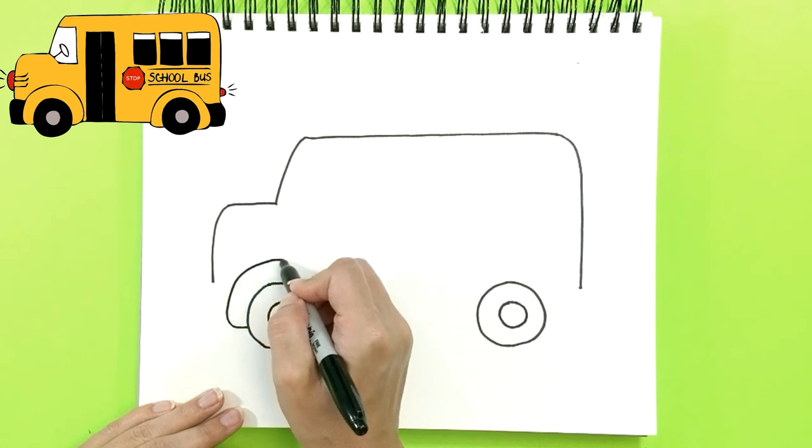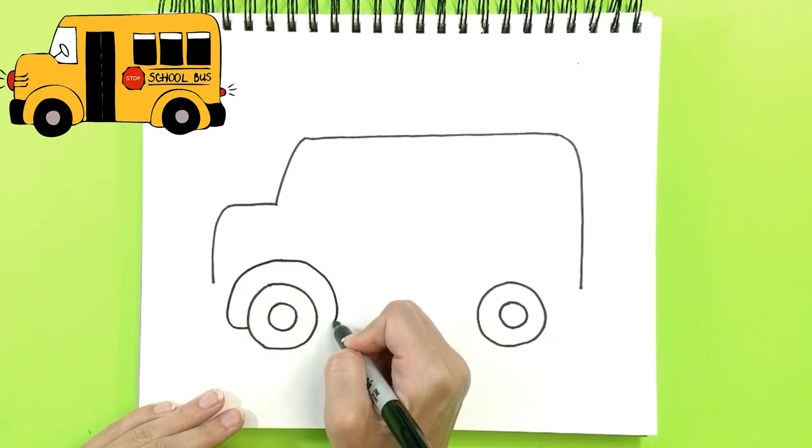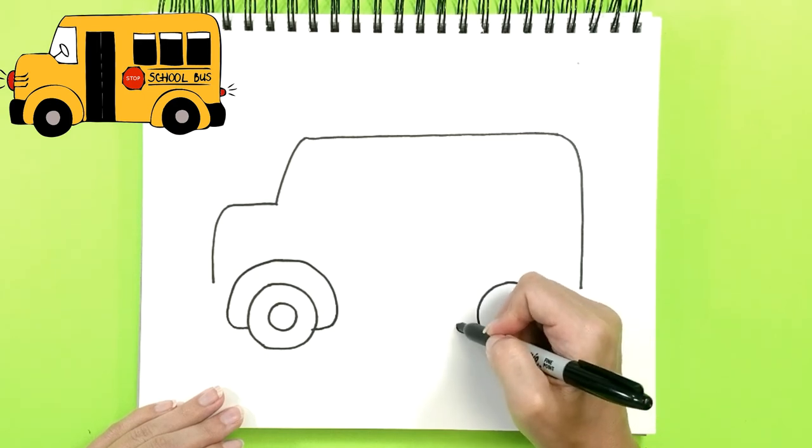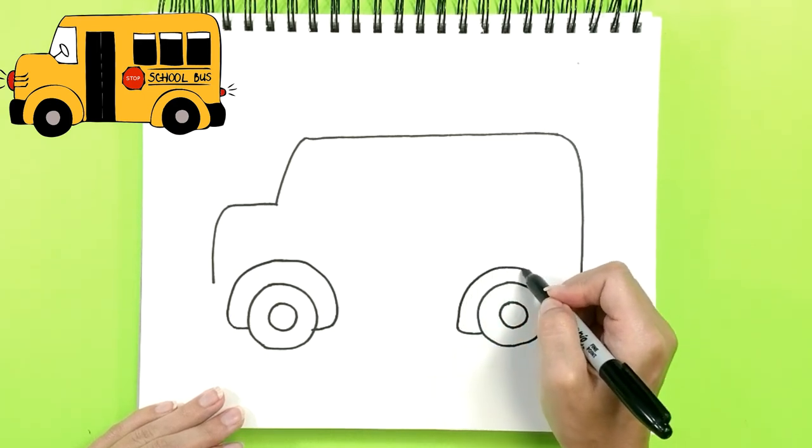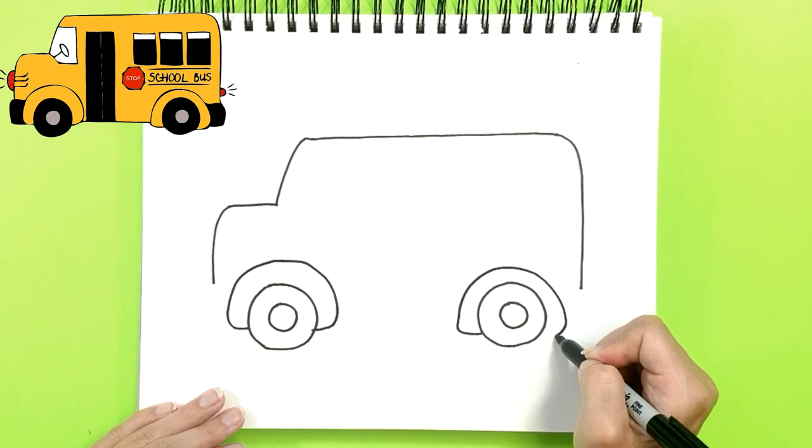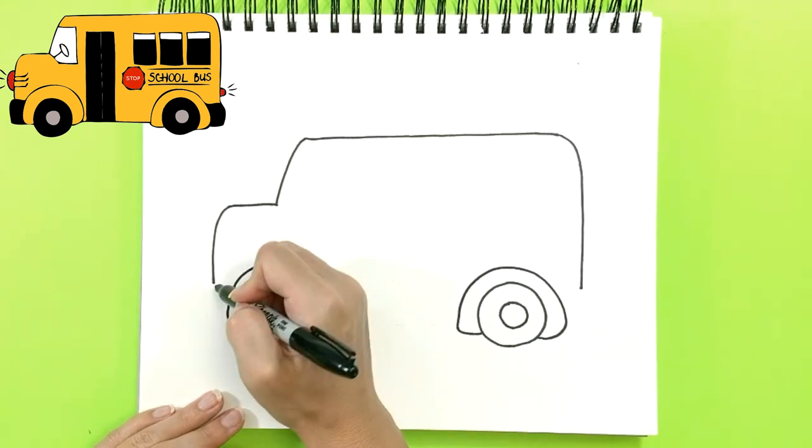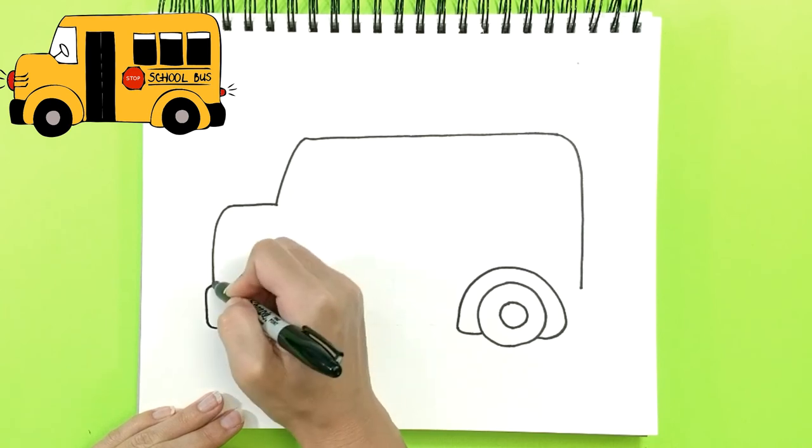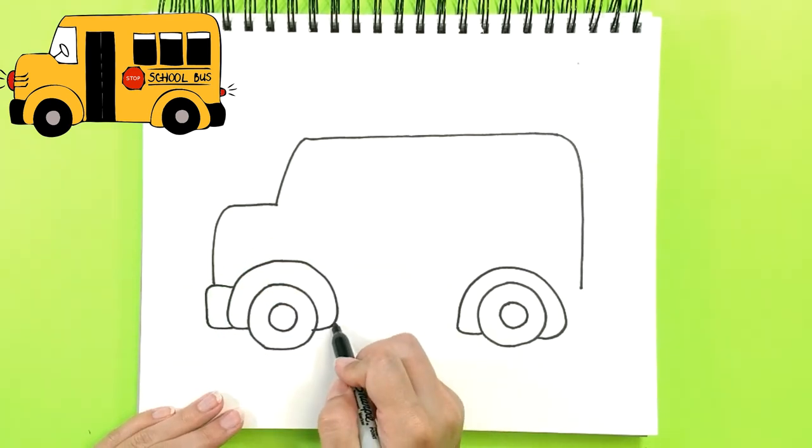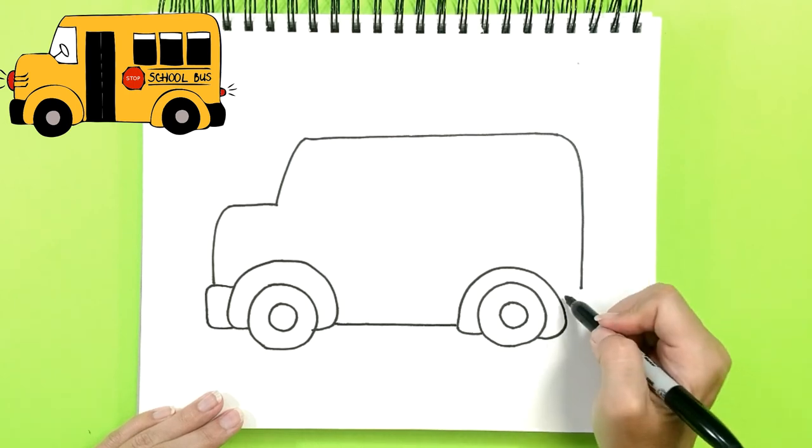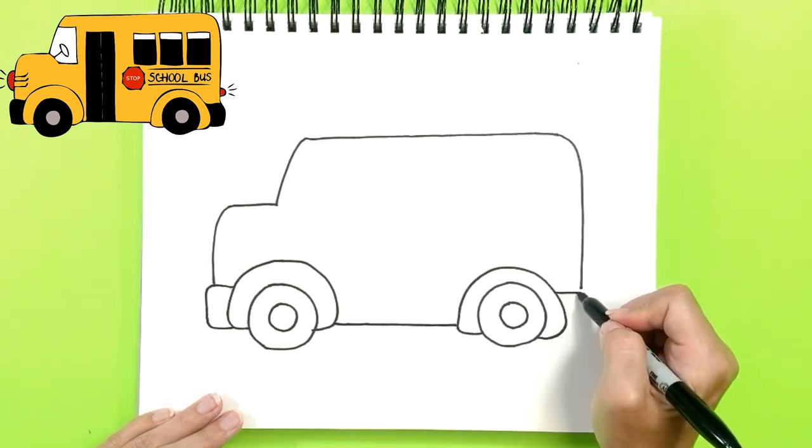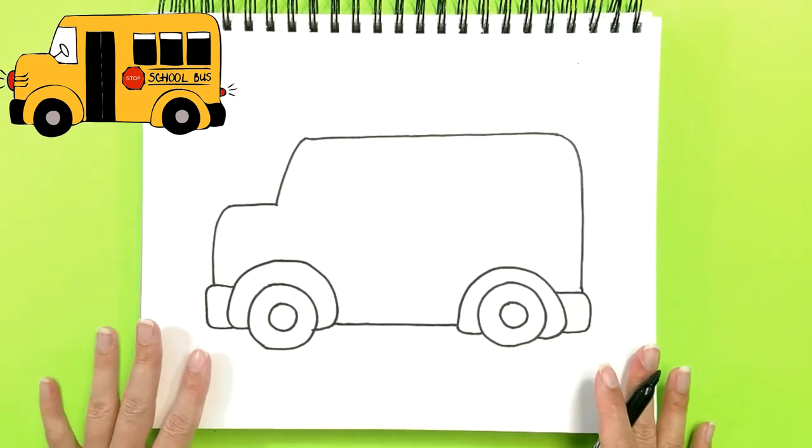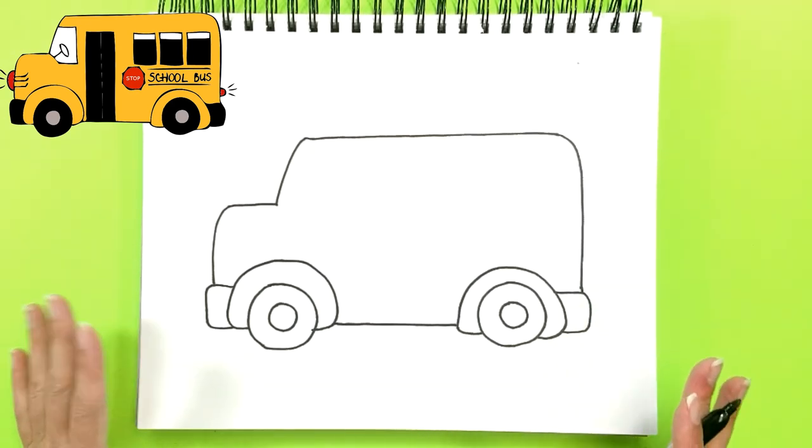And this will make our bus look cool. Here we go, the bottom. Same on this side. Okay, the outline is done. Now, let's draw the cool parts.